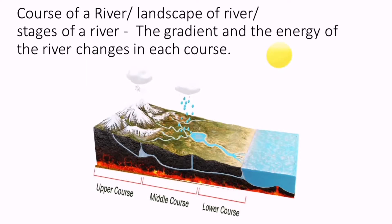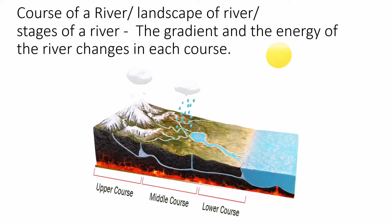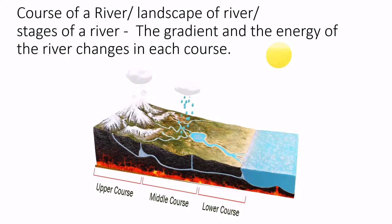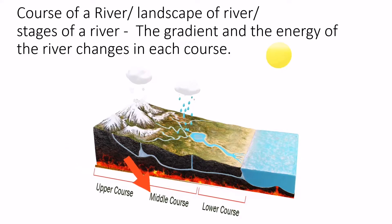Courses of the river, also called landscape or stages of the river. We know that the gradient and the energy of the river keeps on changing from its source till its end. So based on that, we have three major courses or stages of a river: the upper course, middle course, and lower course.